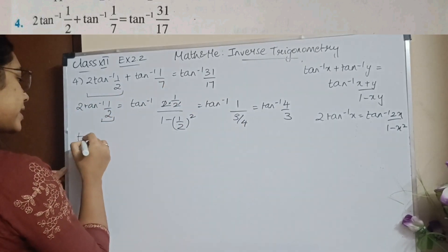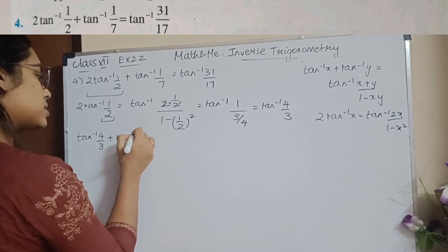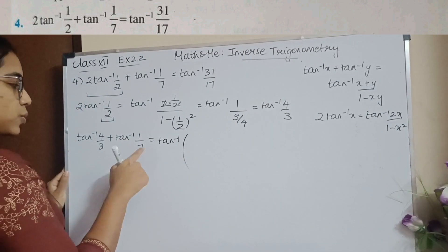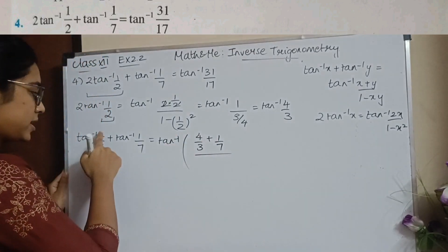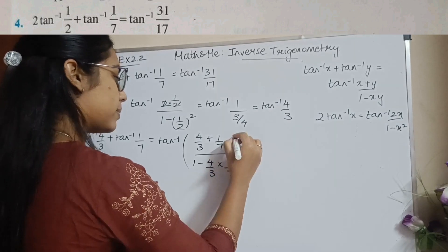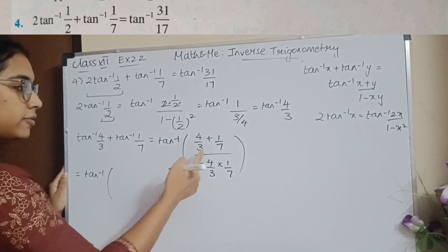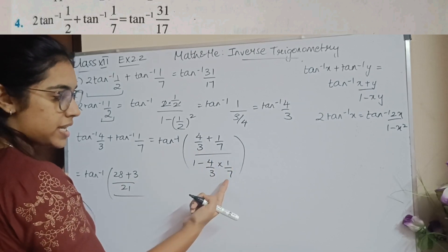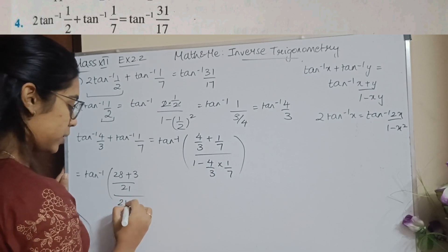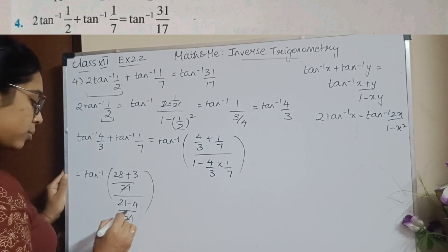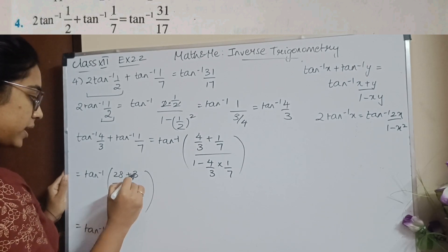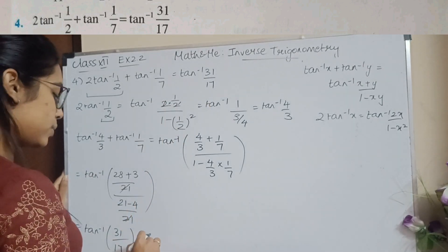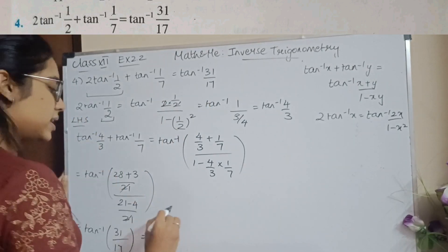Now adding the second term: tan⁻¹(4/3) + tan⁻¹(1/7). Using the addition formula: tan⁻¹[(4/3 + 1/7) / (1 - (4/3)(1/7))]. The numerator: 28 + 3 = 31 over 21. The denominator: 21 - 4 = 17 over 21. The denominators cancel, giving tan⁻¹(31/17), which equals the RHS. Hence LHS = RHS.